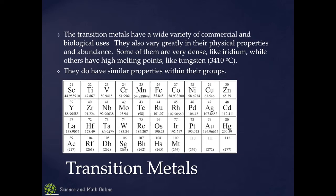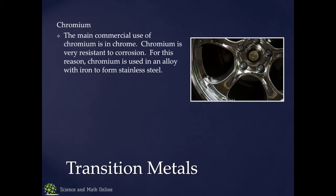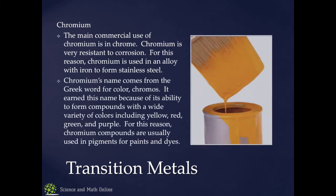They have similar properties within their groups, and some are more important than others. Chromium is very resistant to corrosion — that's why it's used to make chrome, as a coating on stainless steel. You add a little bit of it — under 3% — to steel and you get chrome. Its name comes from the Greek word for color, chromos, because it forms compounds with a wide variety of colors — this yellow here is called chromium yellow, but it can also form reds, greens, and purples.